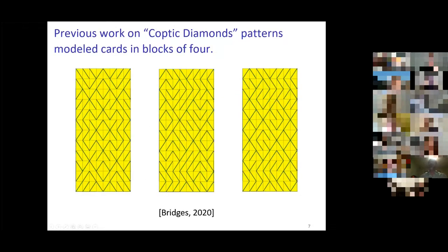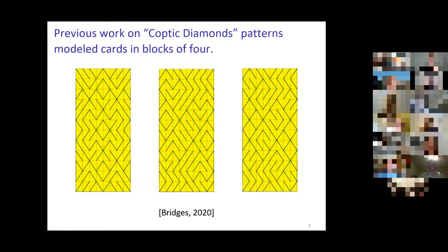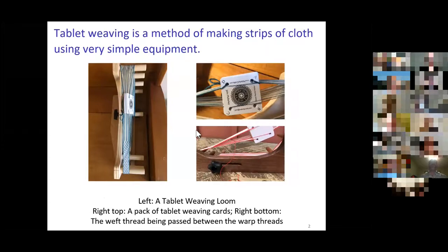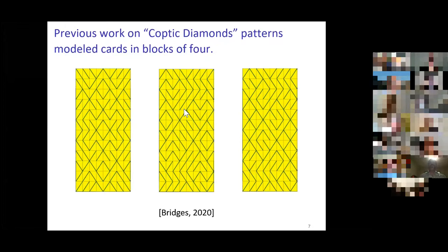In previous work with a different sort of tablet weaving pattern—this is also a tablet weaving pattern—I should have pointed out that in Egyptian Diagonals, these cards are threaded with two light and two dark, which is not the way it's threaded here. This is actually threaded for Coptic, which is one dark and three light. That's an important difference between my previous work and the new work. In the previous work with one dark and three light, it doesn't have that characteristic angled transitions.